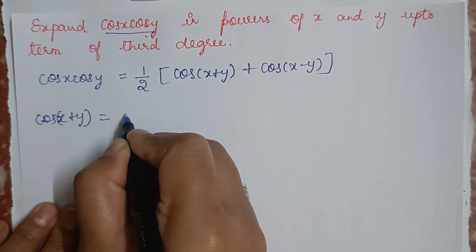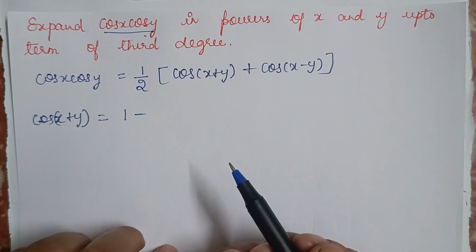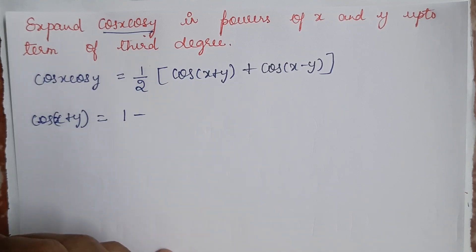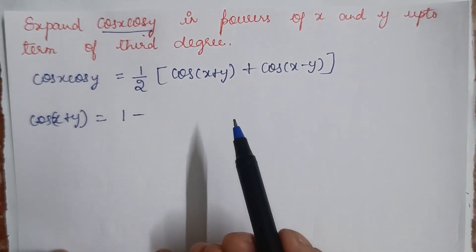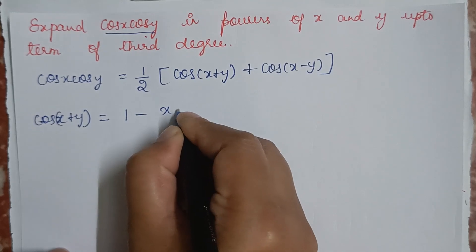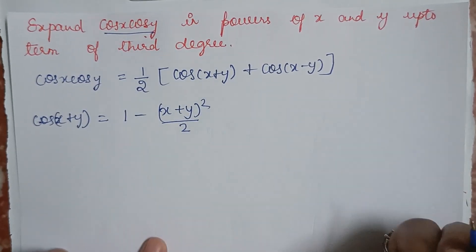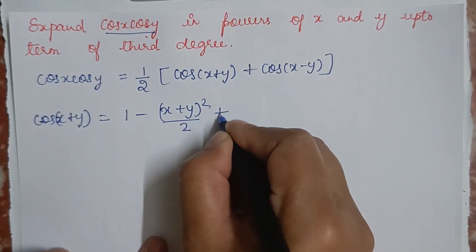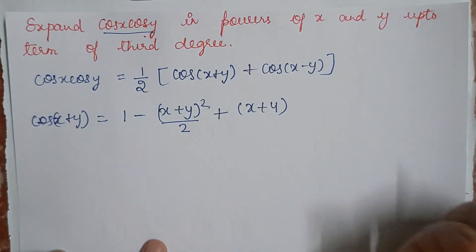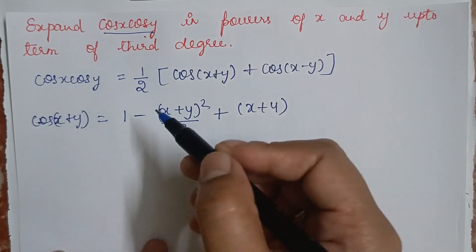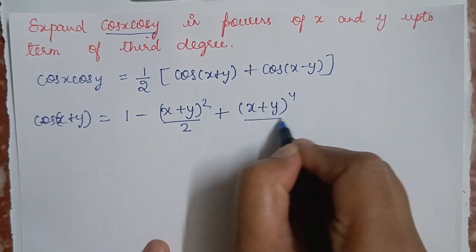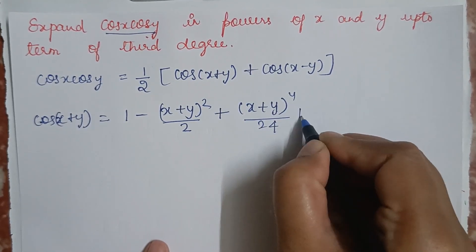Expanding cos(x+y): note that cosine is always an even function, so all odd-degree terms get cancelled out. Therefore, cos(x+y) = 1 − (x+y)²/2! + (x+y)⁴/4! − ... which is 1 − (x+y)²/2 + (x+y)⁴/24 + and so on.